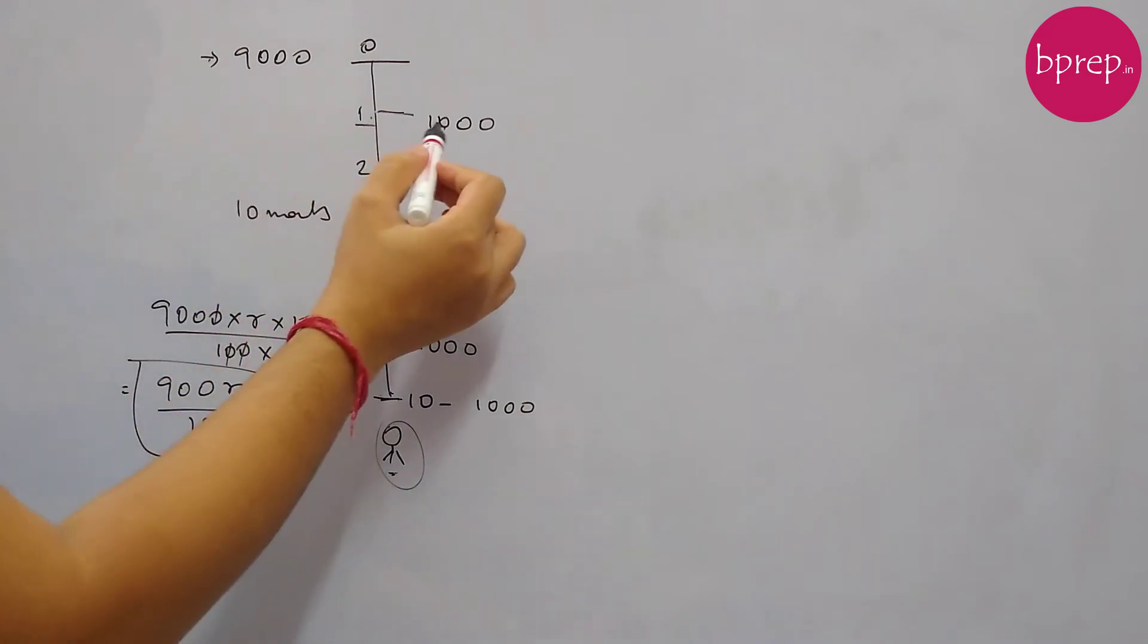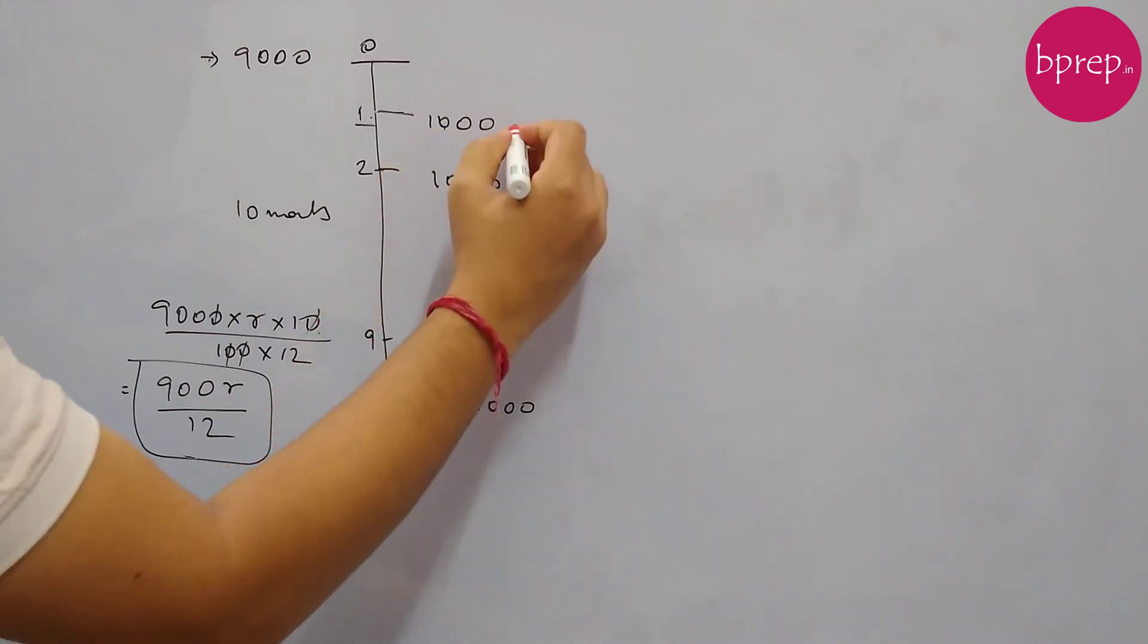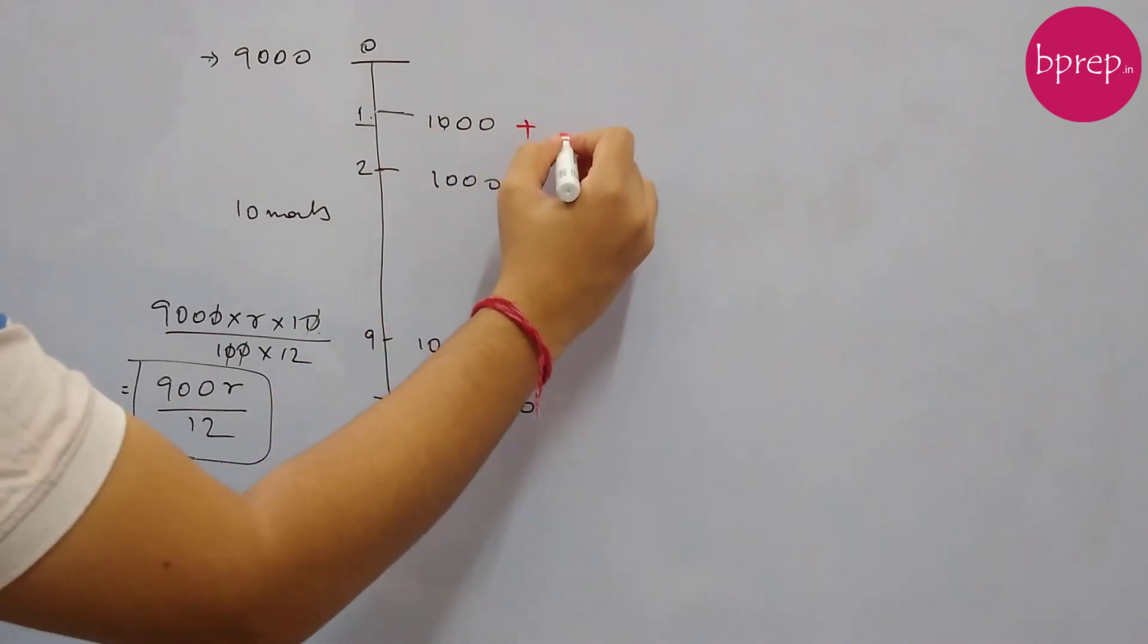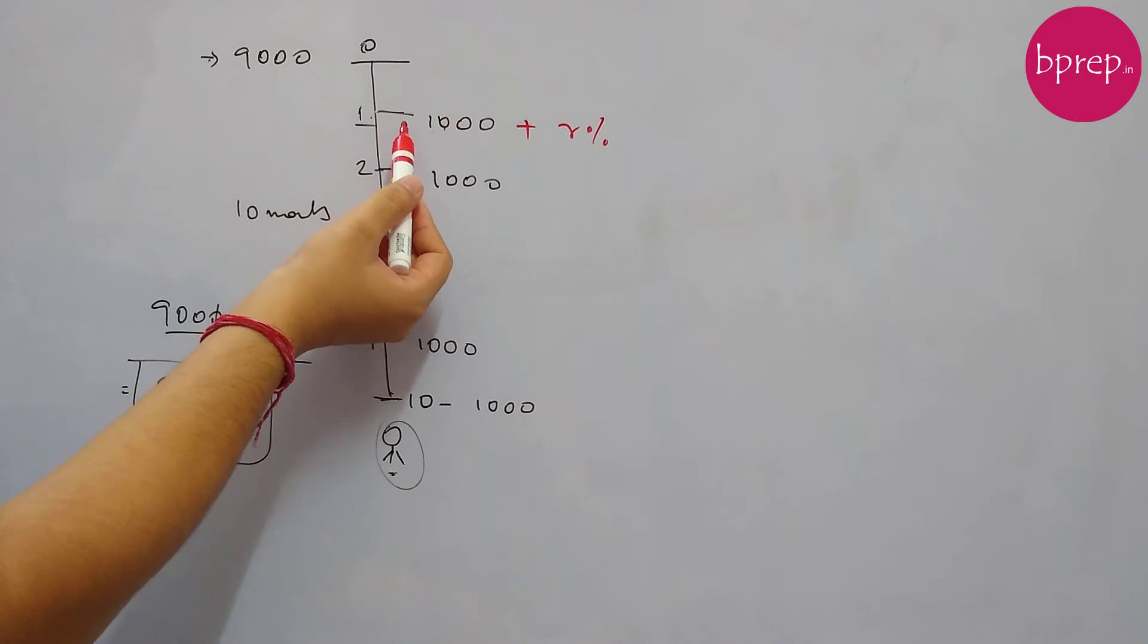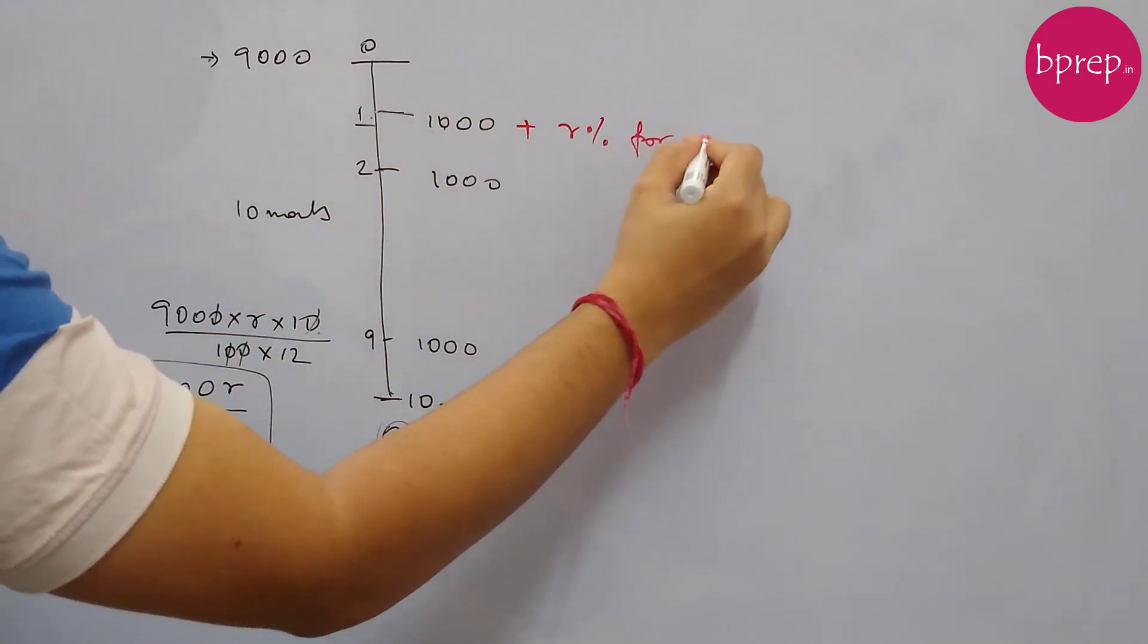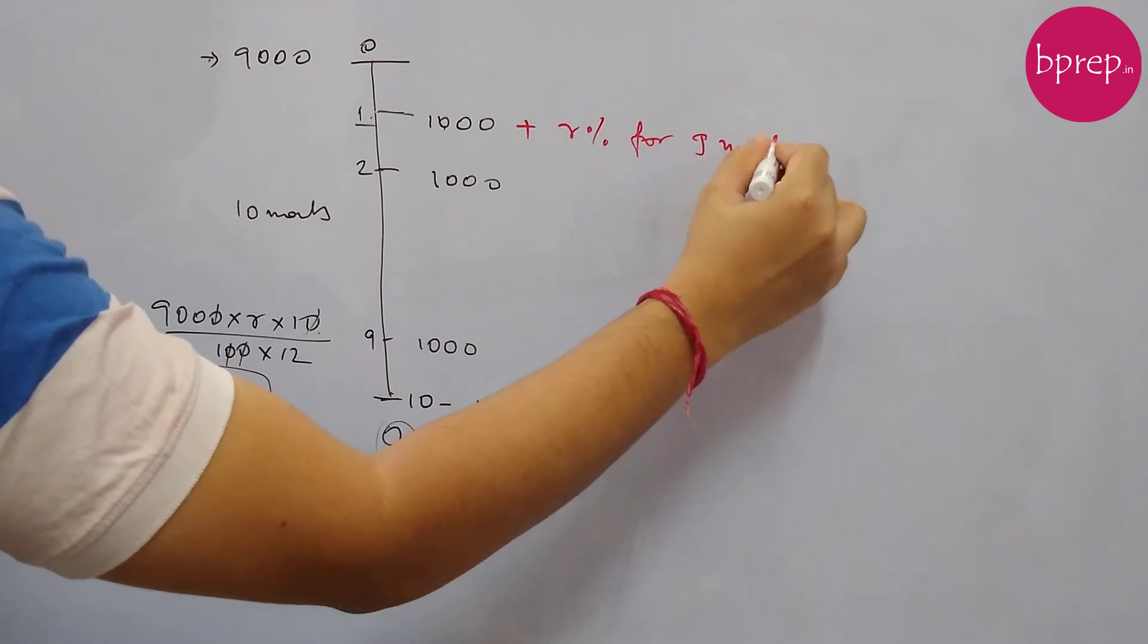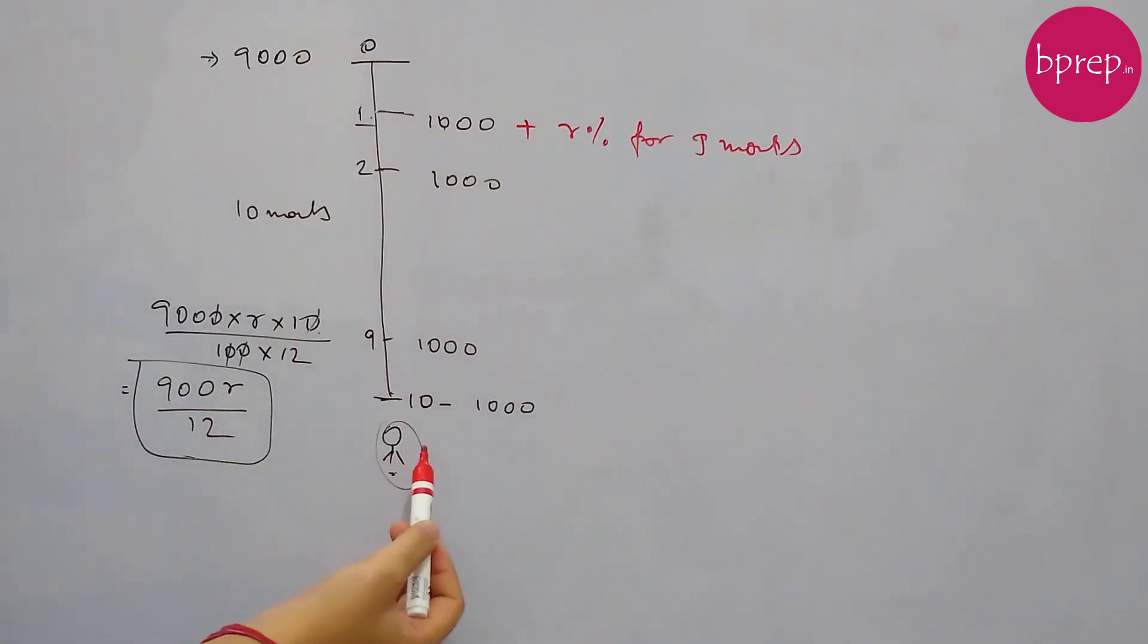Just see this as an investment. So this 1000 rupees, the first installment - we are here, from this point 9 months ago 1000 rupees was invested somewhere. So what is the current value of this 1000? Current value of this 1000 is 1000 plus R% of this 1000 for 9 months. We are here and this money was invested 9 months back.